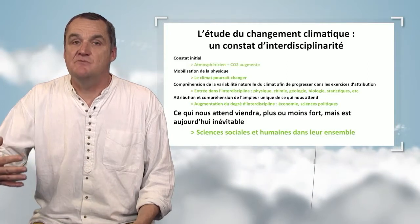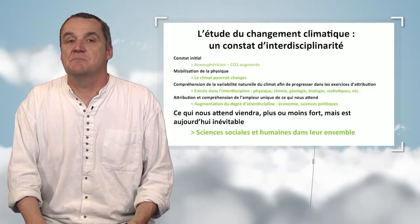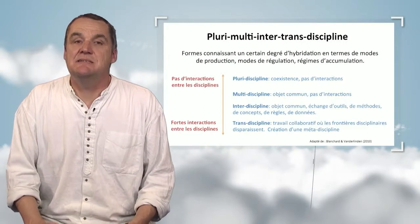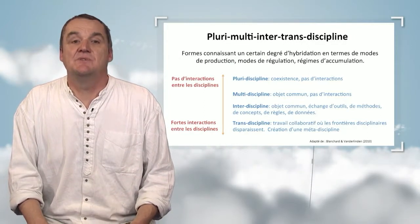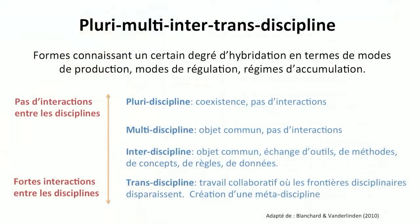We discover a problem and progressively this leads to the construction of a practice where all disciplines are involved. But what does it mean that all disciplines are involved? What is a discipline, first of all? To summarize, a discipline is a way to control the discourse. Science produces words, which are used together to make sentences, and the sentences are brought together to form a speech or a discourse.